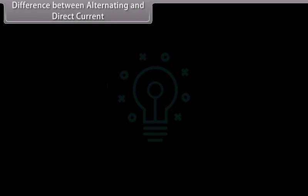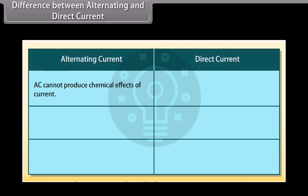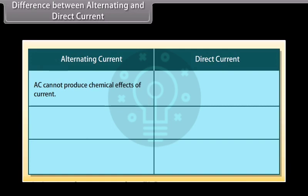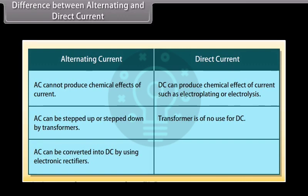Differences between alternating and direct current: AC cannot produce chemical effects of current, but DC can produce chemical effects such as electroplating or electrolysis. AC can be stepped up or stepped down by transformers, but a transformer is of no use for DC. AC can be converted into DC by using electronic rectifiers, whereas DC can be converted into AC by inverters.